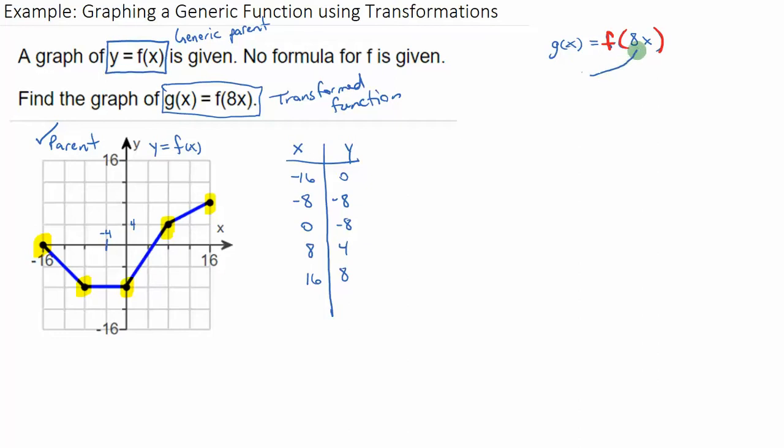So I go inside my parent function, which is right here. And that's going to give me my x transformations. X transformations happen inside the function. And what I do is I extract what's inside, 8x. And I treat it like it's in some equation that I want to solve, like it's 8x equals any number. It doesn't matter what the number is.